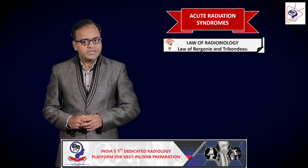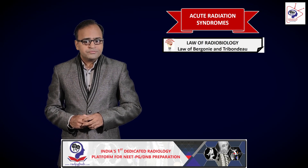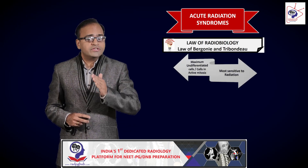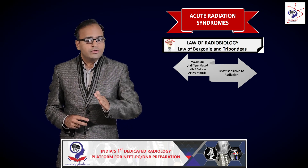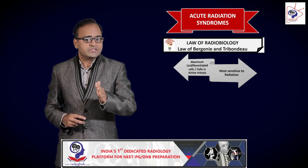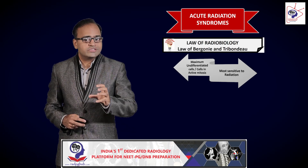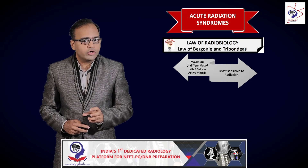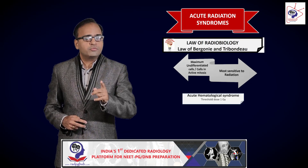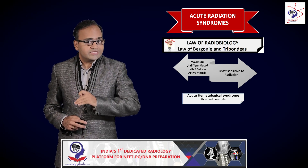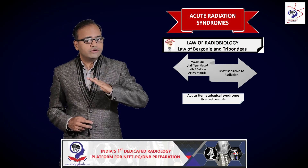One component of the law of radiobiology is also called the law of Bergonie and Tribondeau. This law tells us that whatever tissue, organ, or region in the body has the maximum proportion of undifferentiated cells or cells in active mitosis, that system or organ will be most sensitive to radiation. So, whatever system has the most undifferentiated cells or cells in active mitosis will be affected first. Using this concept logically, you would realize it is going to be the hematopoietic system — and that is why acute hematopoietic syndrome is the first acute radiation syndrome. The next system in logical order is the GI tract.